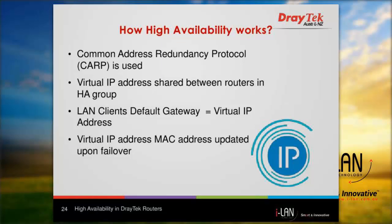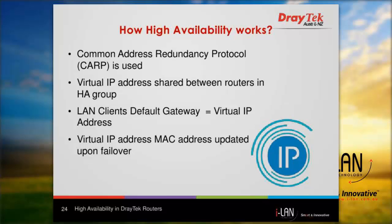With Draytech routers configured for high availability, a common virtual IP address is shared between all the routers in the high availability group. This virtual IP address is used by all LAN clients as their default gateway. This means LAN clients do not have to be reconfigured with a new default gateway should the primary router fail — the LAN clients will only see a broadcast to update the MAC address for the default gateway, resulting in minimum interruption.